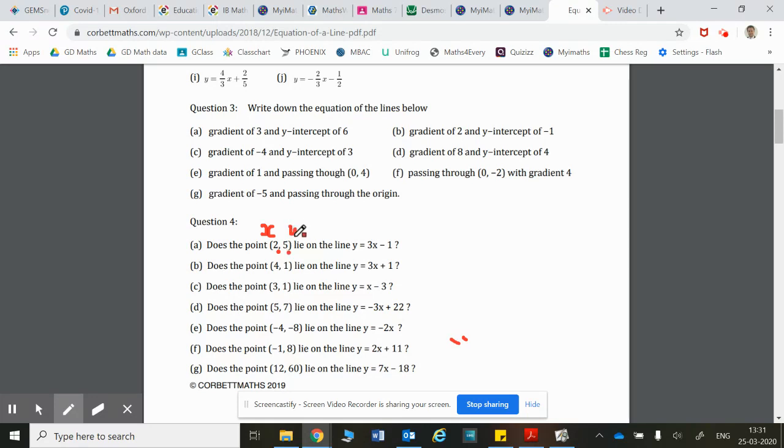And the 5 is our y number. That's always the number which comes second. Okay, so we've got y equals 3x minus 1. We need to see if this is satisfied, if it works with these two numbers. So we're going to put in...